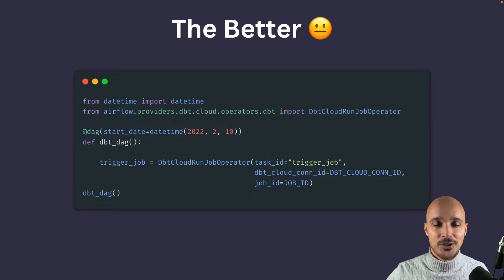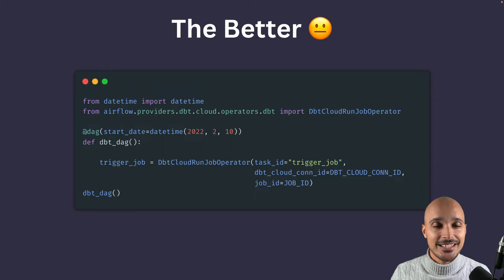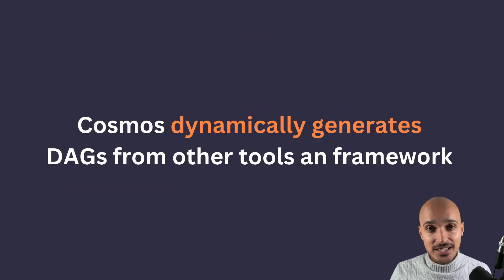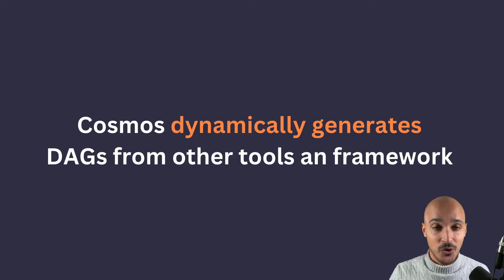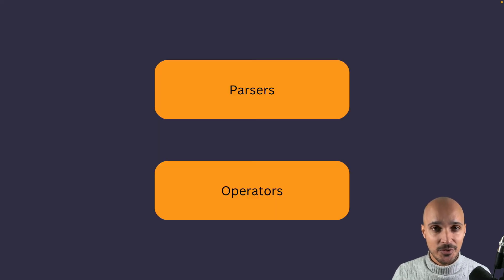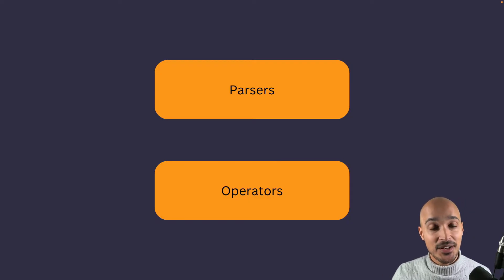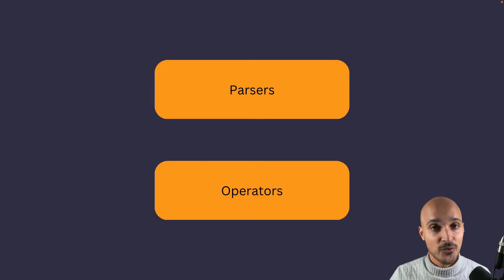It's now time to tell you the best way to integrate DBT with Airflow, and that is Cosmos. So what is Cosmos? Cosmos parses and renders third-party workflows as Airflow DAGs, task groups, or even individual tasks. Cosmos has two components: the parsers and the operators. The parsers are responsible for extracting a workflow from a provider like DBT and converting it into an Airflow DAG, task, or task group. Every time the Airflow scheduler parses your DAG files, the parsers from Cosmos are executed and your workflow is rendered.